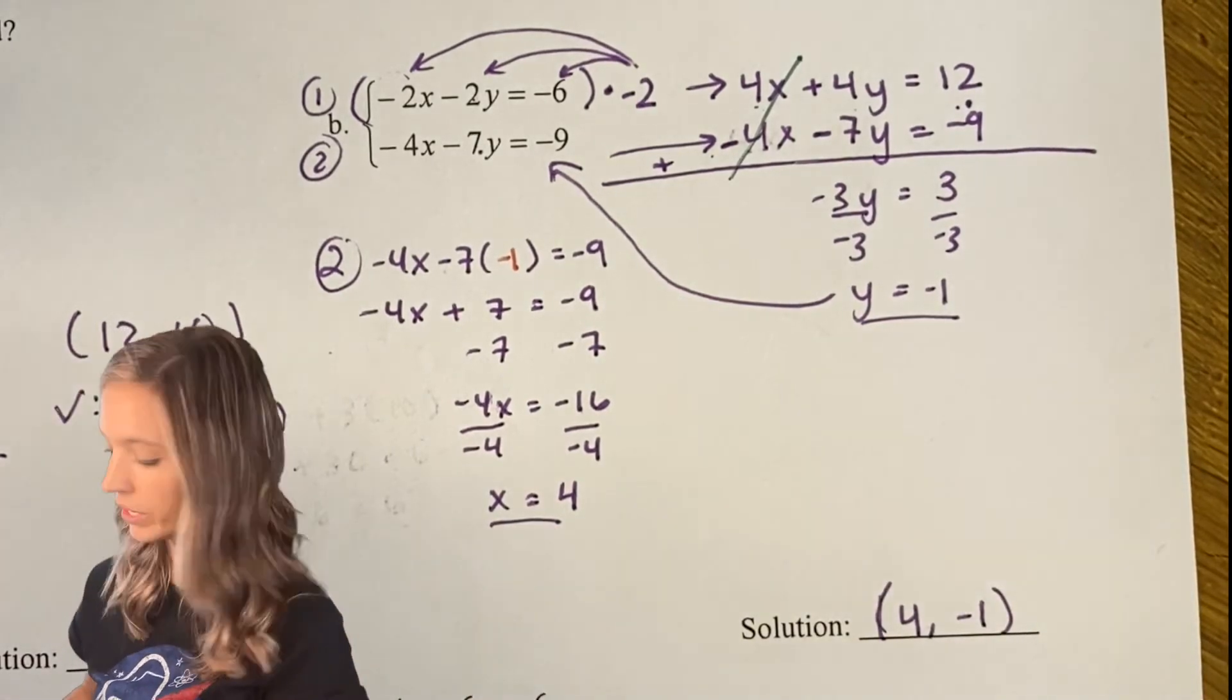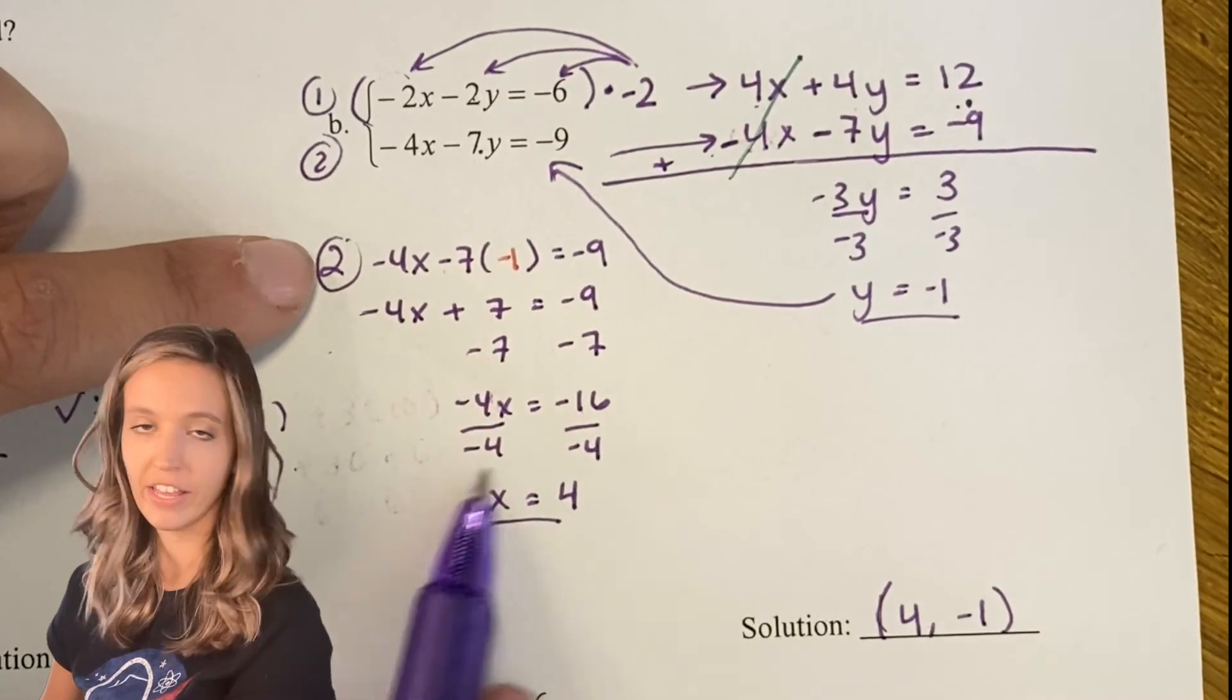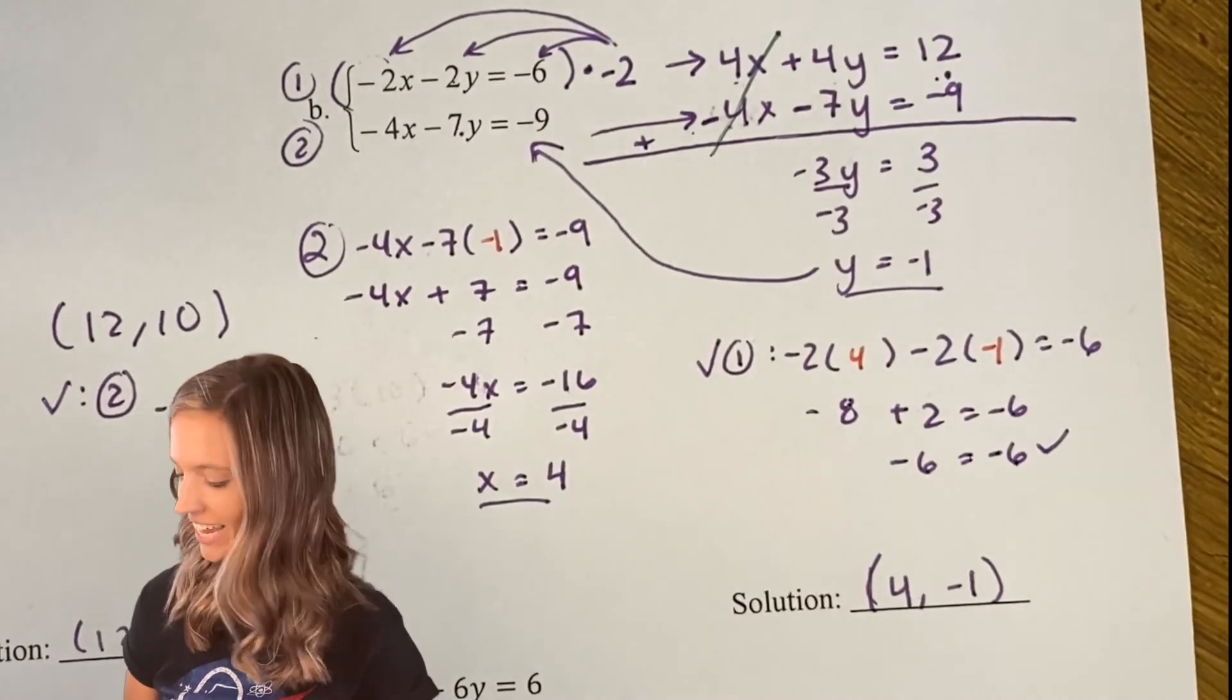Make sure you're writing your solutions as coordinates. Go ahead and check your solution. Remember since we use the second equation to find the second coordinate, you just need to check it in the first equation. Looks like it all checked out.